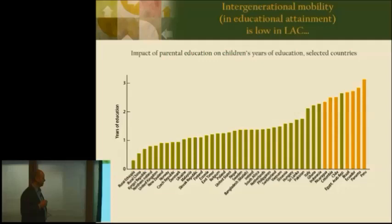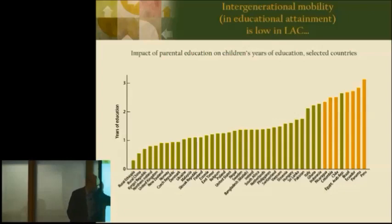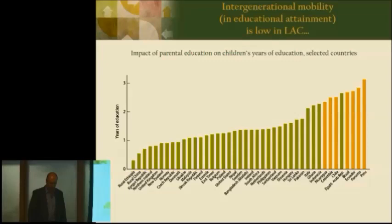We took their data and transformed it. What we have here is what we call the impact of parental education on children's years of education. If you ran a regression of the kids' years of schooling on the parents' years of schooling, took the beta coefficient, multiplied it by the standard deviation of the distribution of years of schooling of the parents — that's what is here.